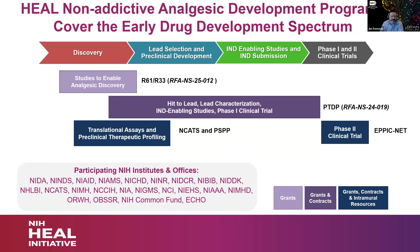The HEAL Initiative's goal is to speed scientific solutions to the opioid crisis. One step in that process has been to promote and advance the discovery and development of novel therapeutics for analgesia. You can see in this slide where PTDP fits in the middle of the bar. It encompasses a broad section of the R&D process from late discovery all the way through phase one clinical trials. There are a few other programs to be aware of as you listen to the criteria for PTDP today.